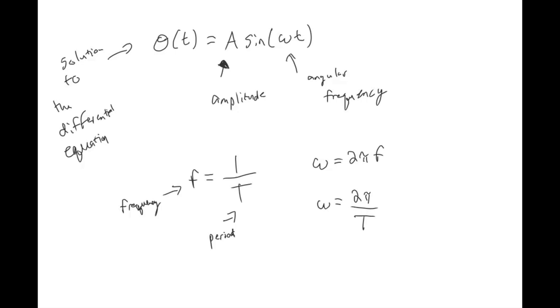And so from the lab yesterday, the period is two pi square root L over g. So if we plug that into our equation for theta, we will get A sine square root g over L times time. And so if you plotted a sine graph, you would just get something that looks like this.